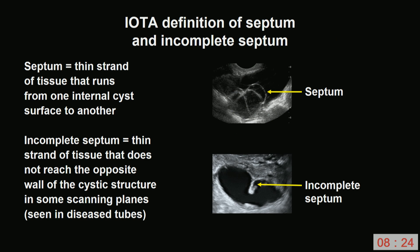The IOTA definition of a septum is a thin strand of tissue that runs from one internal cyst surface to another. The IOTA definition of an incomplete septum is a thin strand of tissue that doesn't reach the opposite wall of the cystic structure. Incomplete septa are characteristic of diseased tubes, such as hydrosalpinx, pyosalpinx, and hematosalpinx.